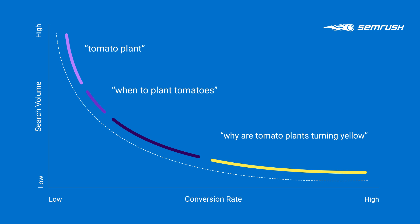Let's pretend you have a blog about gardening. If you try and rank for words like 'tomato plant,' it will take you an incredible amount of time and effort because the average monthly searches are around 22,000. But if you try and rank for 'why are my tomato plants turning yellow,' the average monthly searches are way lower but the conversion rate is way higher. So long tail keywords are keywords that have a low search volume but a very specific intent.